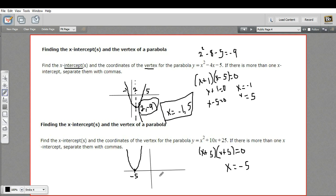So we already know the x value of our vertex. It's the same as the x-intercept. And we can plug that value in here. So negative 5 squared plus 10 times negative 5 plus 25.